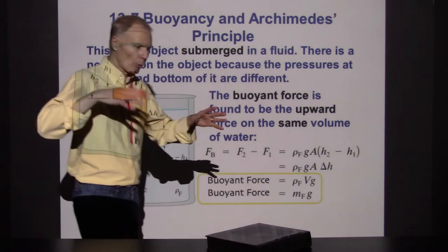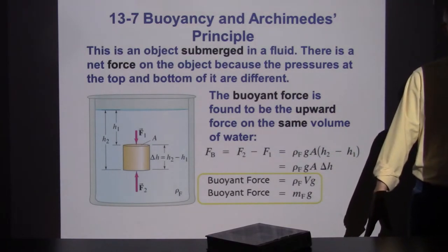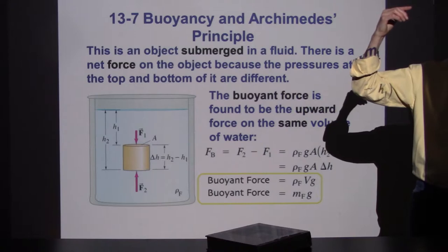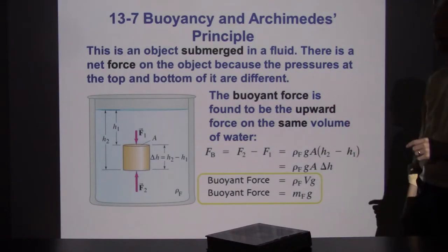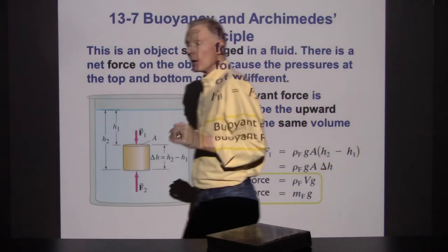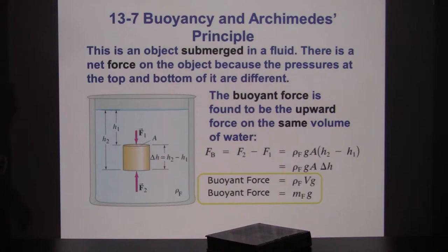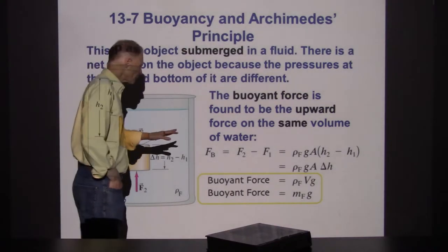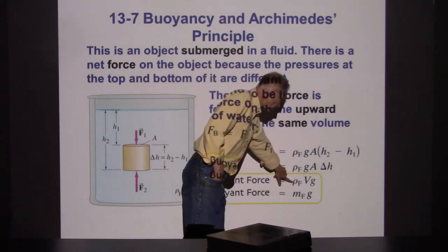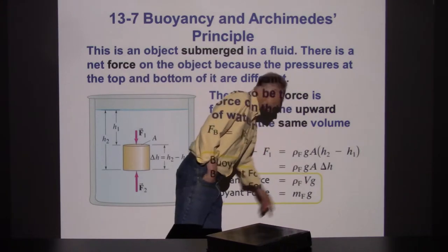I'm having a buoyant force exerted on me right now due to air pressure. The air pressure lower down at my feet is higher than the air pressure at my head. I can use this formula to figure out how much buoyant force I'm getting — it's not much. But if we do the same calculation with water, we'll get a much more significant buoyant effect. Water is 800 times denser, so it's going to create 800 times the buoyancy. The buoyant force can be written as the density of the fluid times the volume of the fluid displaced times the gravitational field.